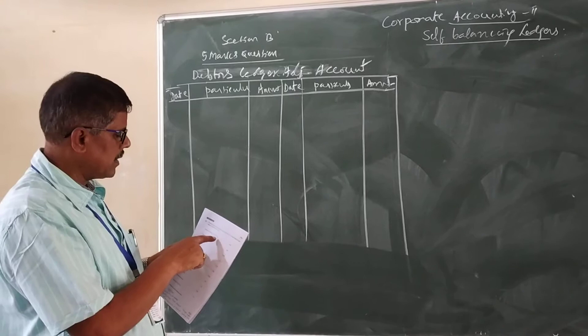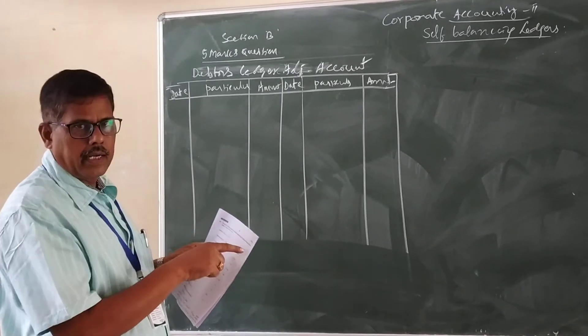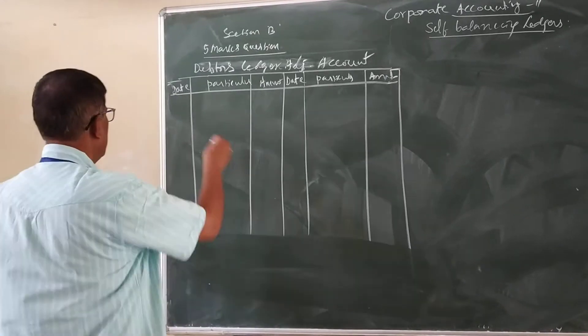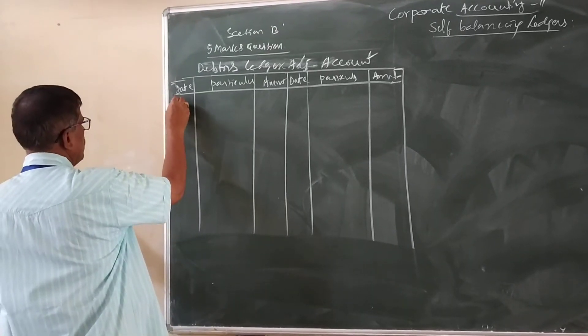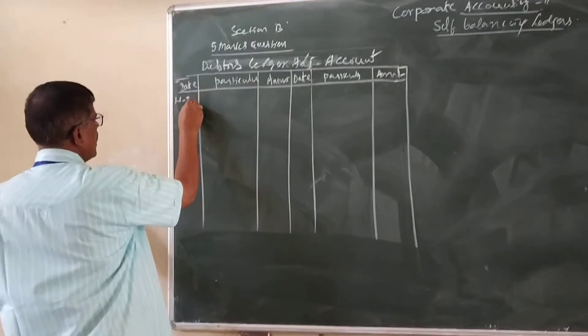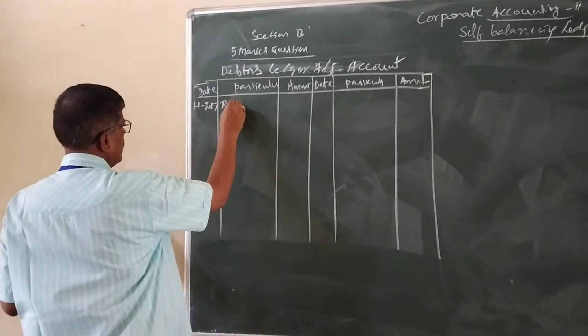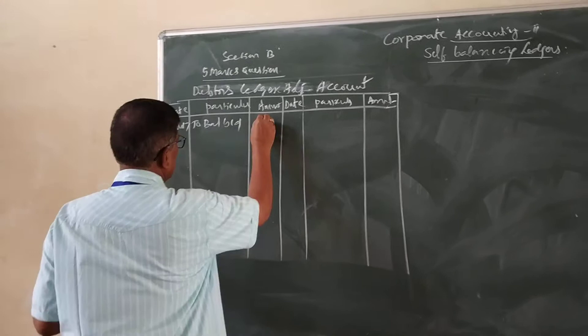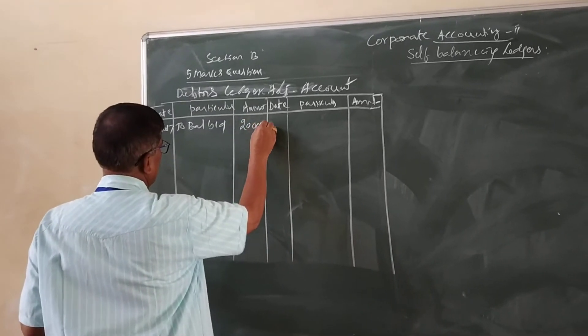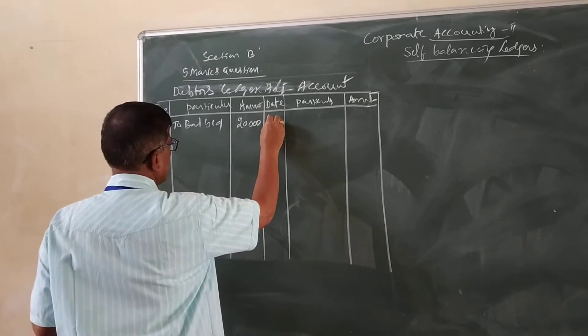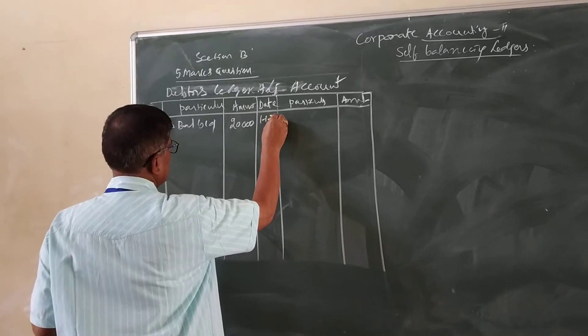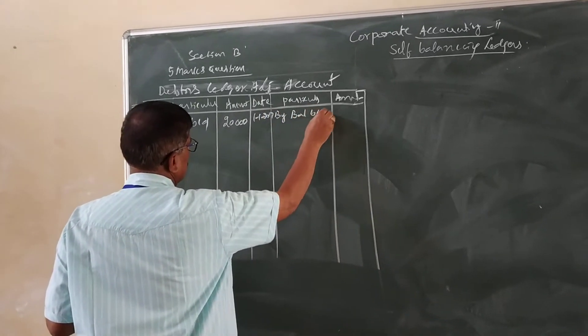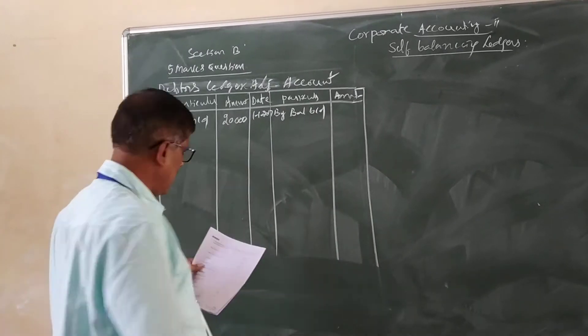First you take out the opening balance, both sides. Debtor's balance debit side, credit balance credit side. Date 1-1-2017, to balance b/d 20,000. At the same, credit side also 1-1-2017, by balance b/d that is 1,000.